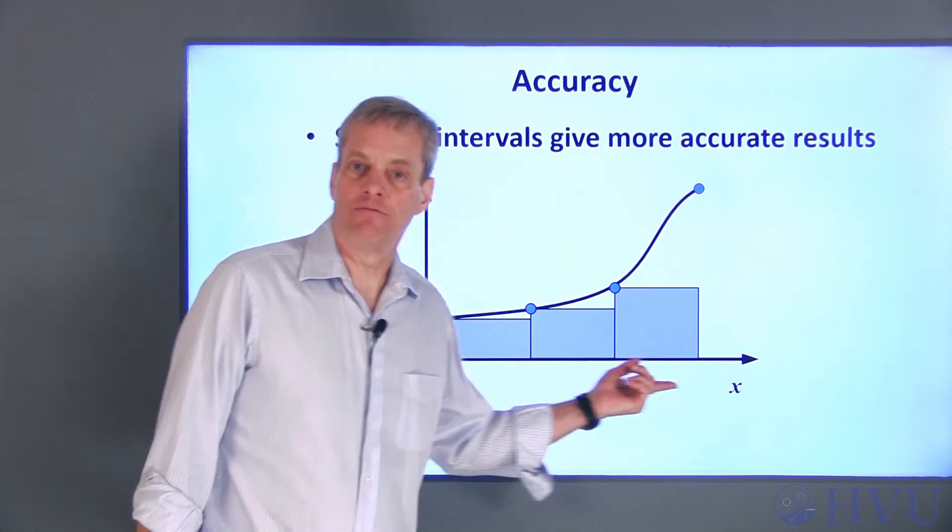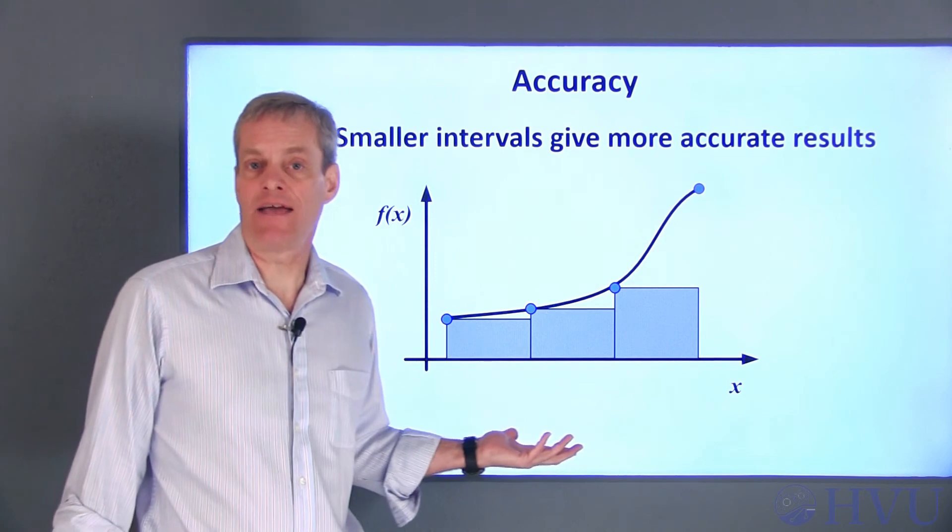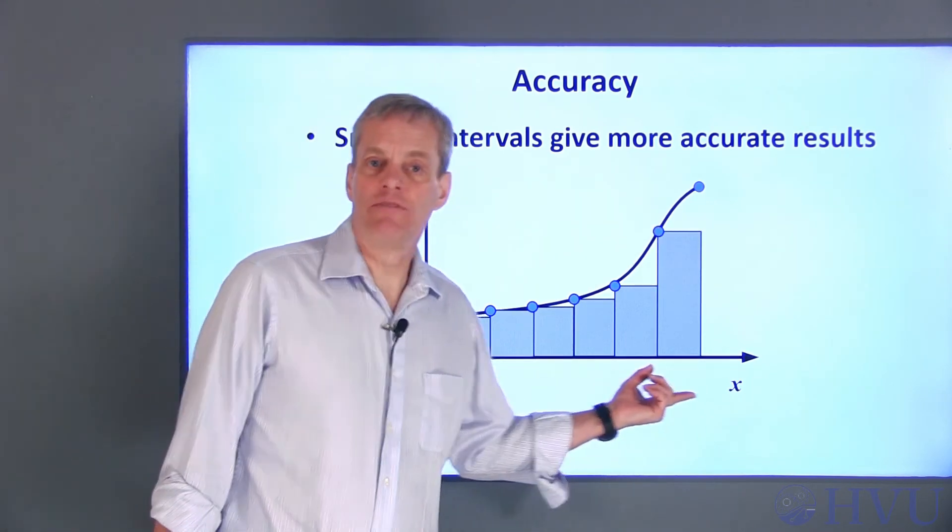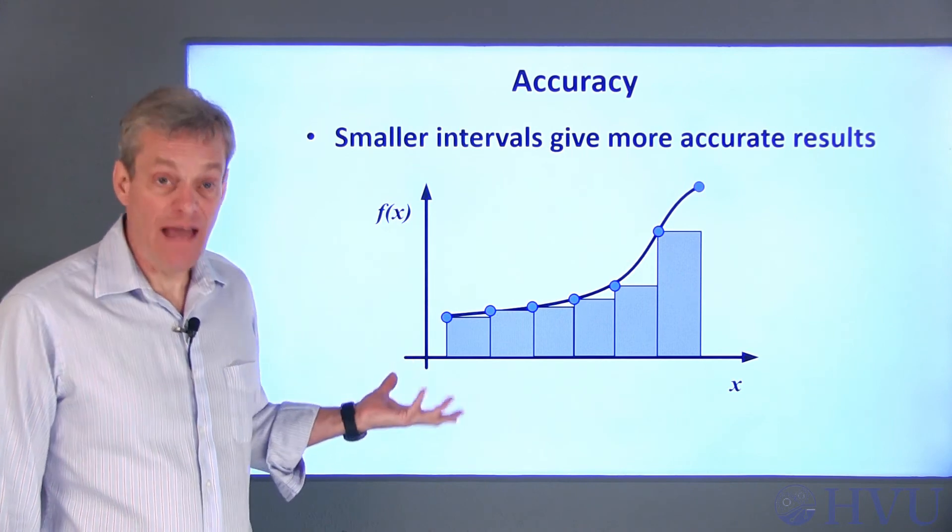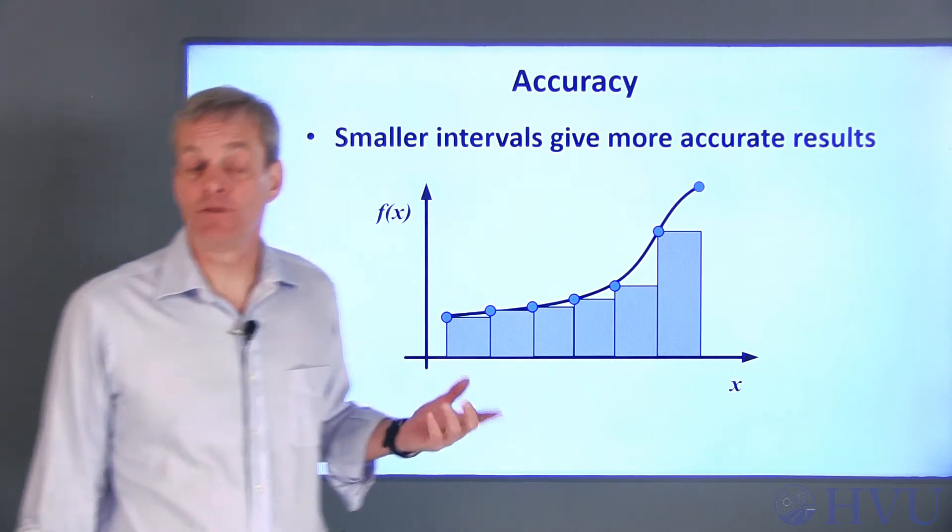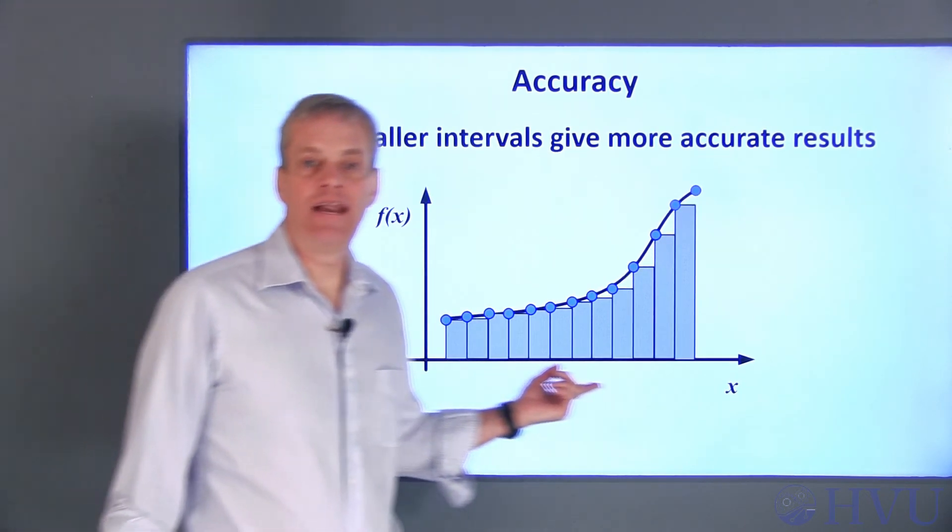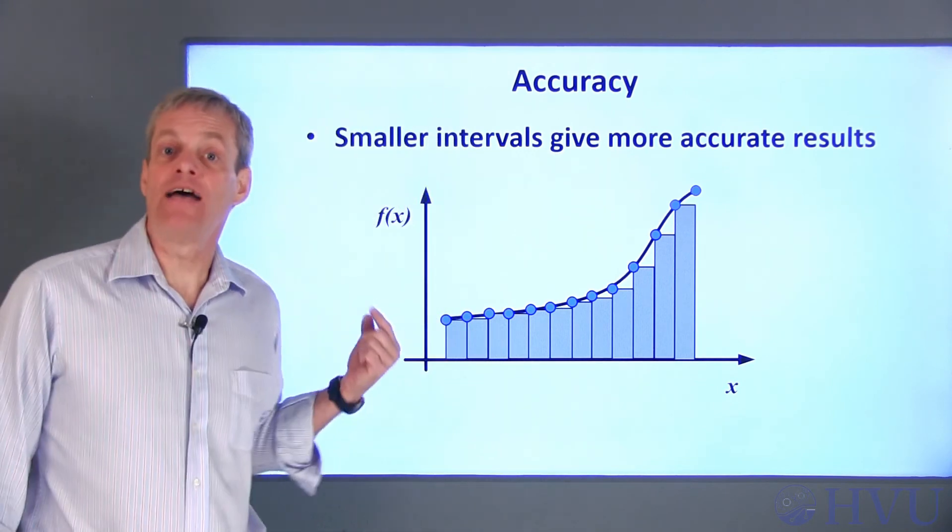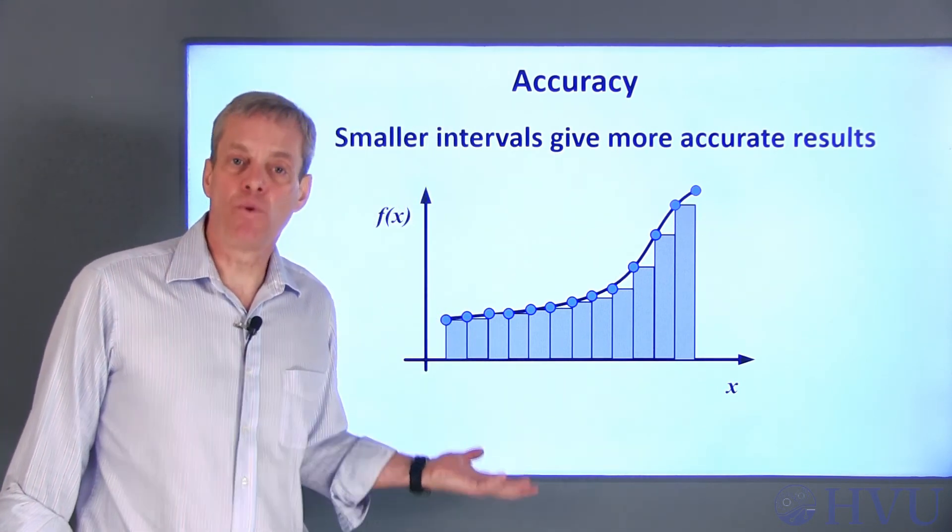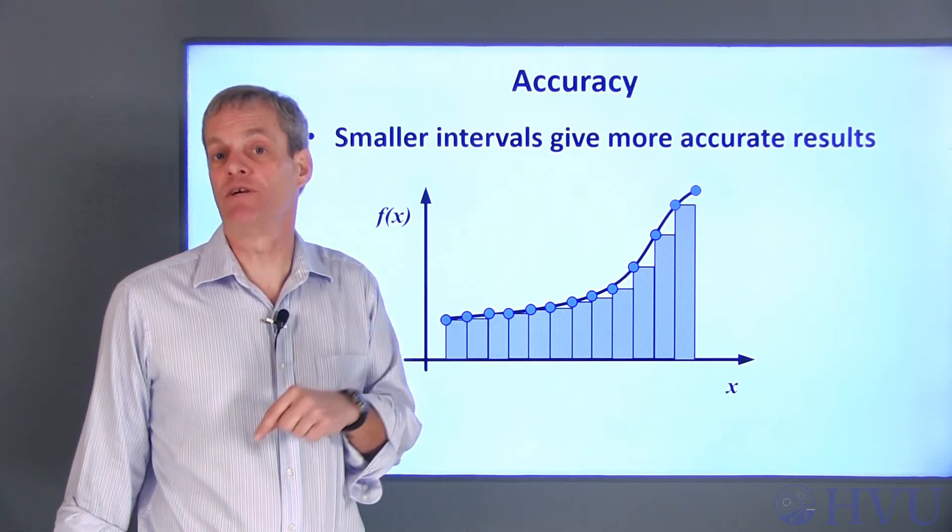Suppose we start with an interval like this. Obviously, these subintervals won't give a very accurate estimate of the integral. Let's cut the width of the intervals in half. Now our estimate is probably a lot better. Also, there's a pretty big difference between the two integral estimates. So let's cut the interval in half again. That should result in a better estimate for the integral. And maybe more importantly, the difference between the integral estimates is smaller than the previous change.